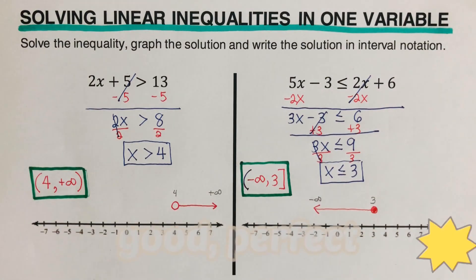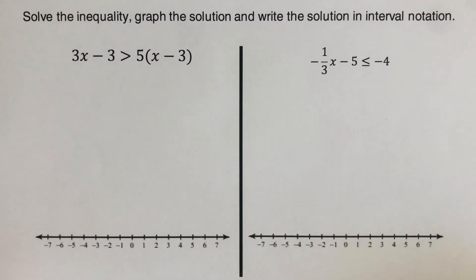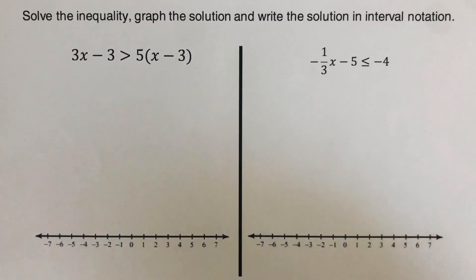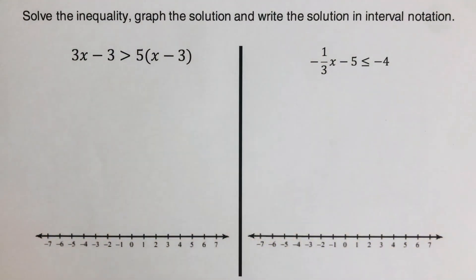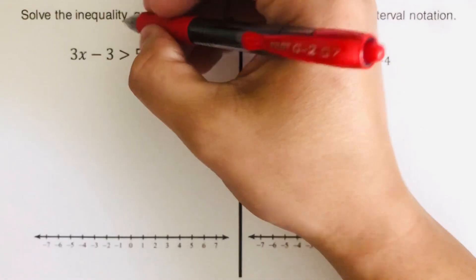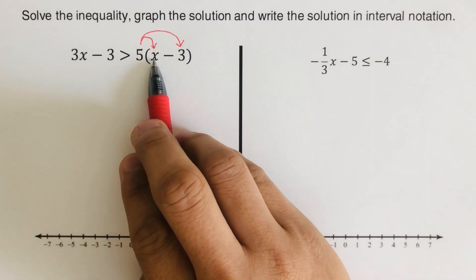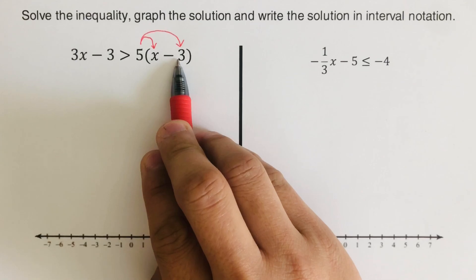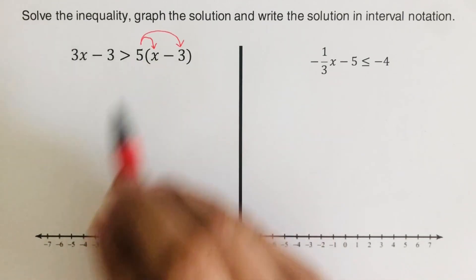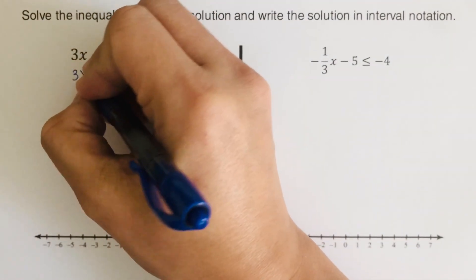Good. Now let's move on to the next problem. We are supposed to solve this inequality and determine the solution in two ways: graphing form and interval notation. Again, we have to isolate x by itself on the left side. Before we do that, we distribute first — be sure to distribute to each term inside the parentheses, because some people distribute only to the x and forget to distribute to the negative 3. It has to be distributed to both terms.